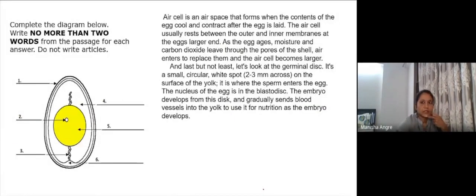Now what is remaining? Yes, then you have the air cell and you also have the germinal disc. So the germinal disc is which part? It's a small circular white spot, so number two is germinal disc. And the air cell, the air cell usually rests between the outer and the inner membranes as the egg ages. So this is the air cell, number six.